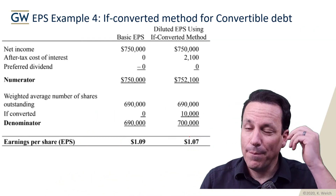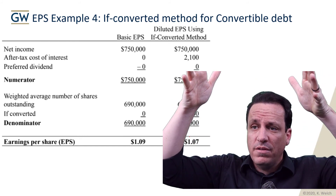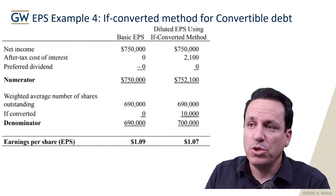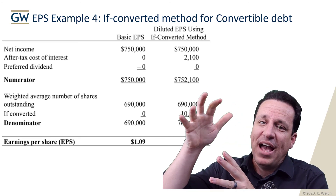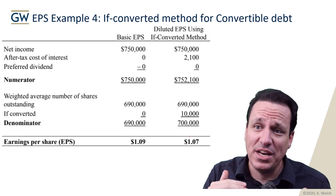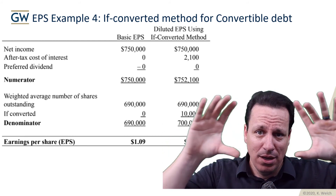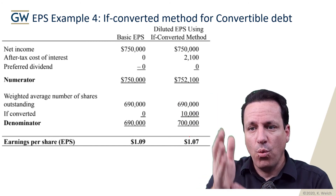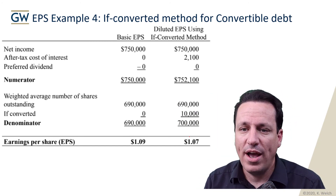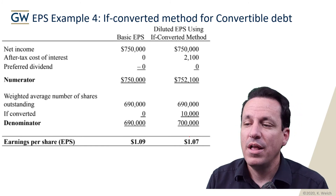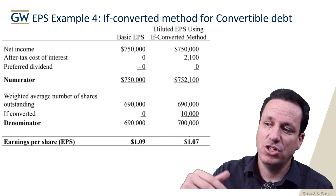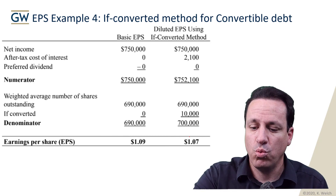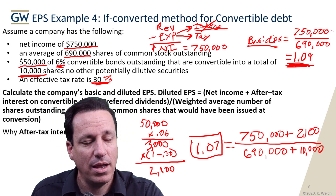Here's a cleaner way to present it. Basic earnings per share: take net income divided by weighted average shares outstanding — that's $1.09. Diluted earnings per share using the if-converted method: take net income, add back the after-tax effect on income of not paying interest, and add the 10,000 shares to the denominator. So 690,000 plus 10,000 becomes 700,000 shares. Basic EPS is $1.09, diluted EPS is $1.07.